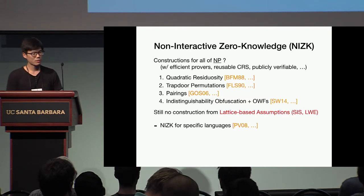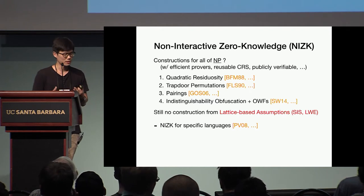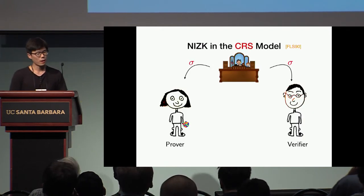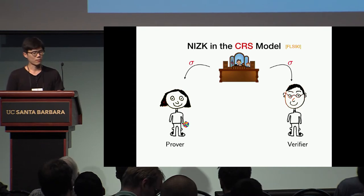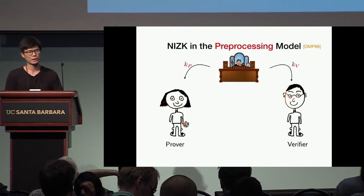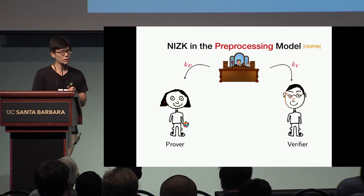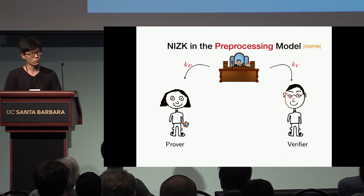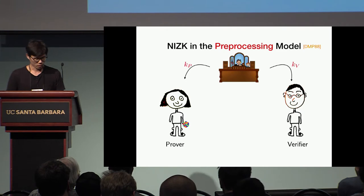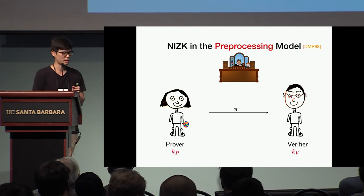In this work, we make progress by considering a weaker model — constructing NIZK in a relaxed model called the pre-processing model. Recall that in the CRS model, a trusted authority generates a common string for both parties. In the pre-processing model, we relax this and allow the trusted authority to generate two different strings: one for the prover, called the proving key, and one for the verifier, called the verifying key. Both keys must be independent of any statement to be proved in future protocols.